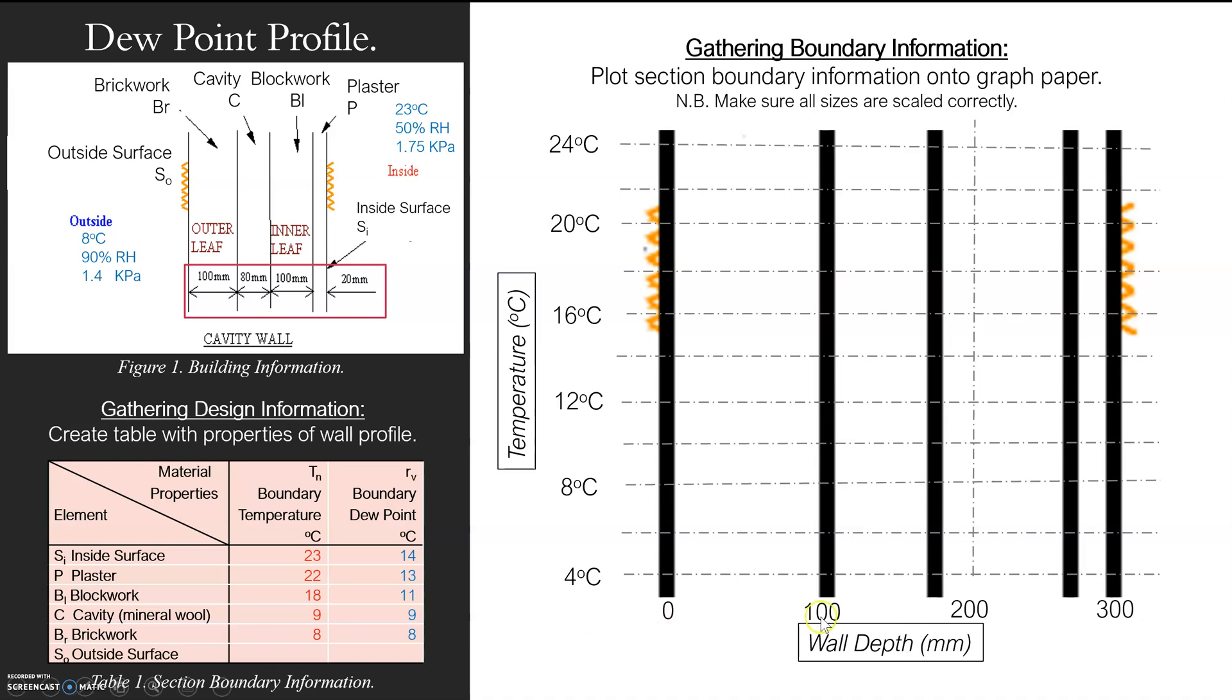On the bottom, on the x-axis, we have got wall depth. I've got it in millimeters. All I've done is transpose that information across here, so you can see the wall, the boundary of each element, and then these little squiggly lines outside, inside. And then again, it's all equidistant, so 100, 200, 300. And then, because this cavity is only 80, I've put the line there, but I'm still showing clearly equidistant increments: 100, 200, 300. So again, it's accurate, our graph will be accurate.